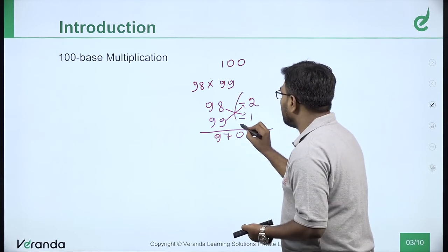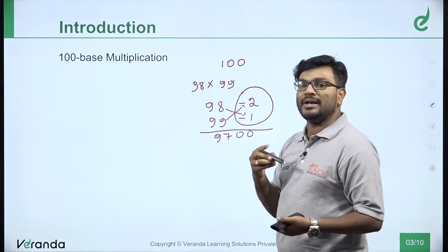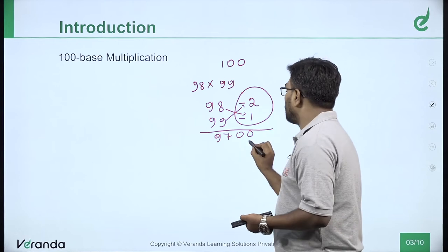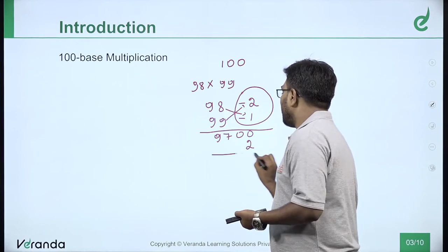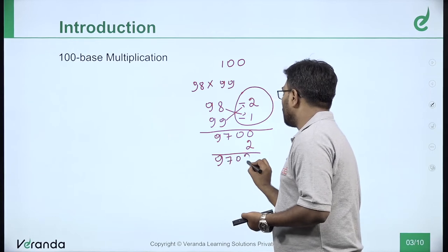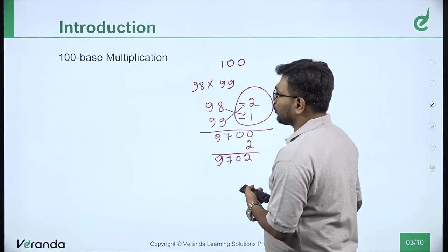Second step, multiply the differences. Minus into minus equals plus. 2 ones are 2, so plus 2. Then your final answer will be 9702.